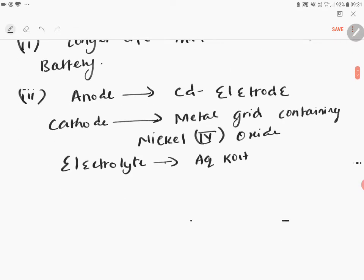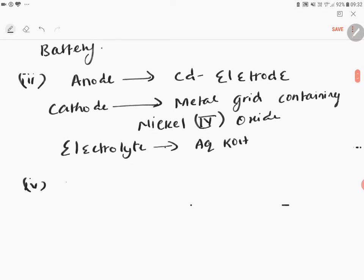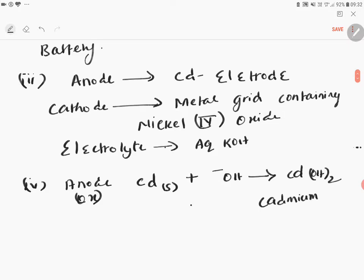Now, going to the equations. What happens at anode? Always at anode oxidation takes place. Cadmium in the electrolytic solution reacts with OH⁻ to form cadmium hydroxide. All of you know cadmium metal, this is cadmium oxidation to hydroxide. Here 0 to +2 oxidation state, so this is oxidation.